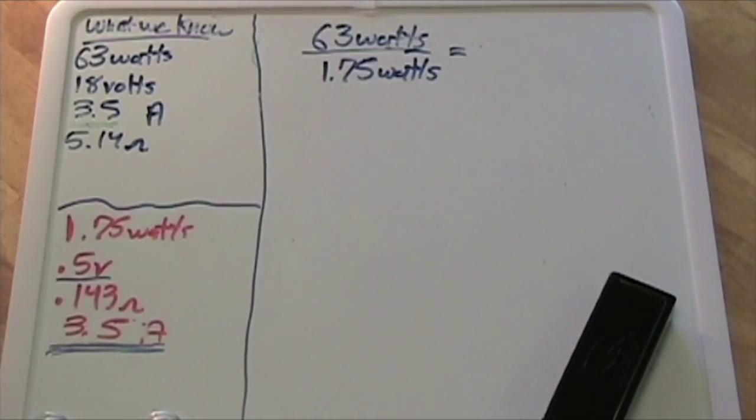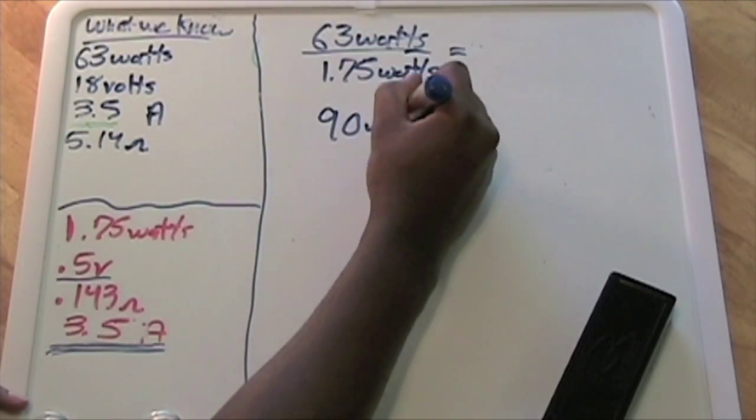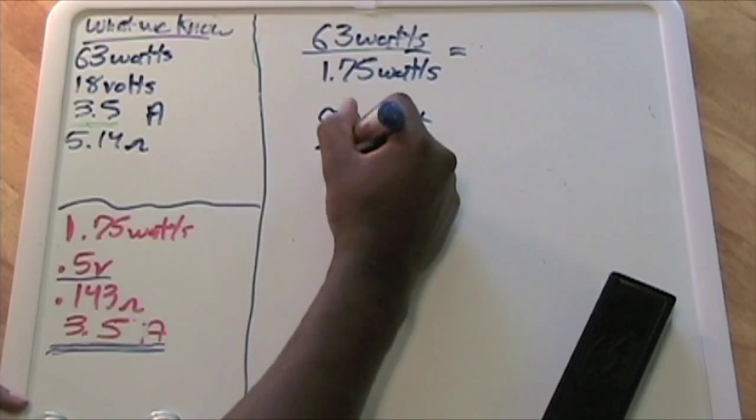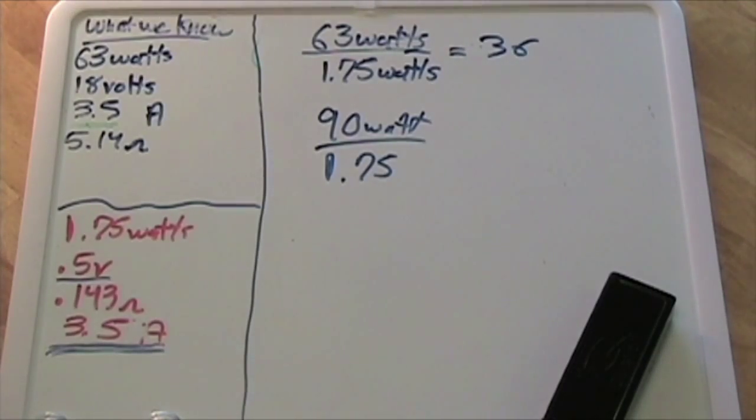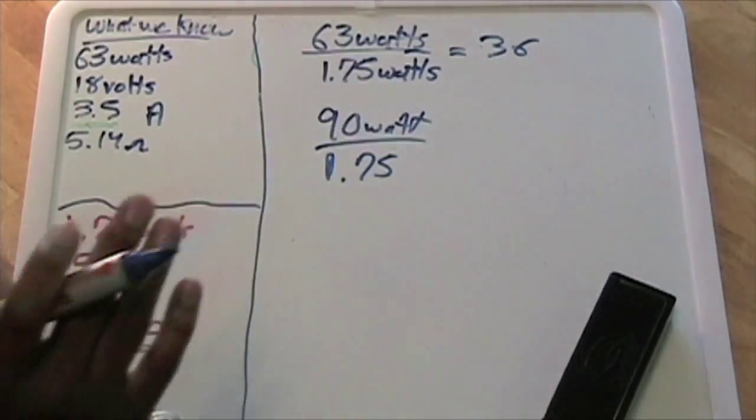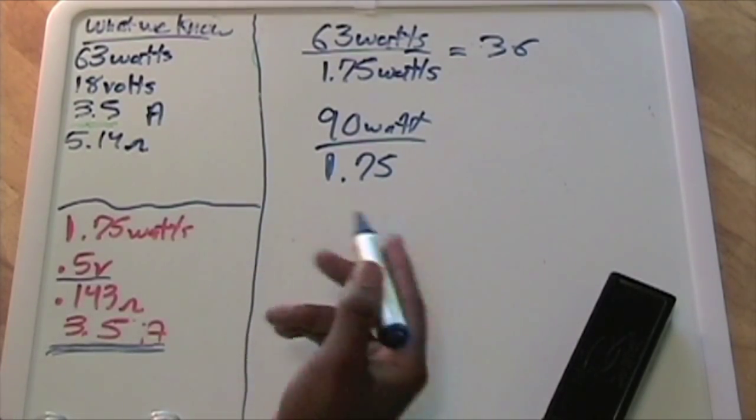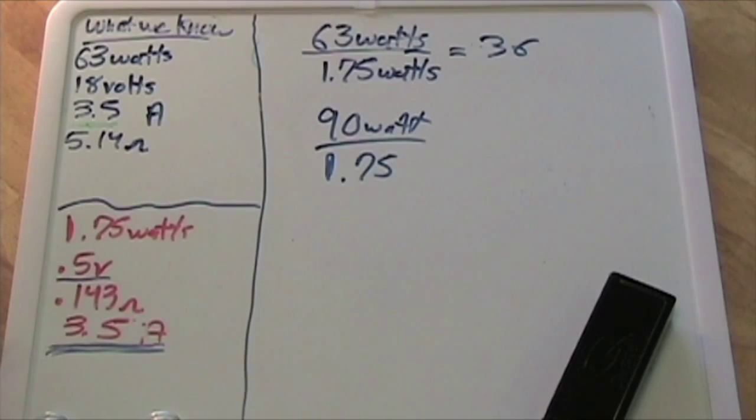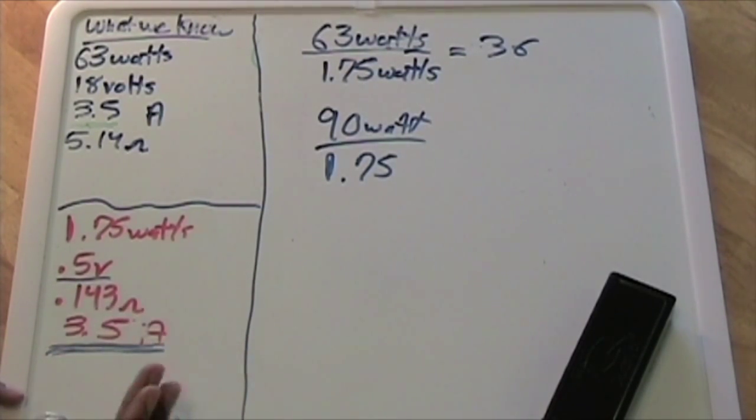You just plot the same thing. If you want to build a 90 watt solar panel, divide that by 1.75 and you get your answer for how many solar cells you need. Again, I'm using this 1.75 - this is not for every solar cell, but I'm using this for the evergreen solar cells, the ones that I bought.